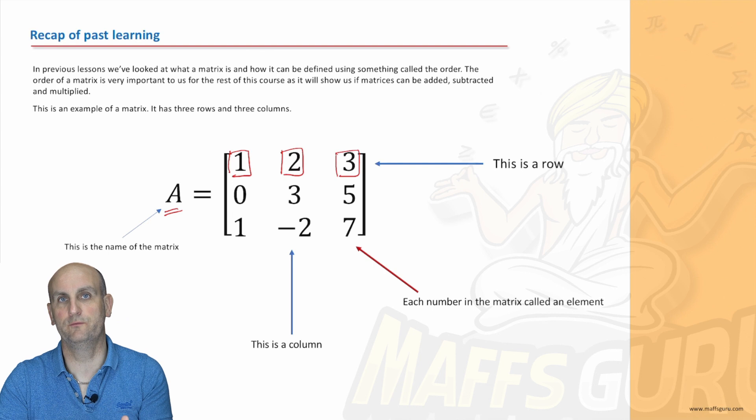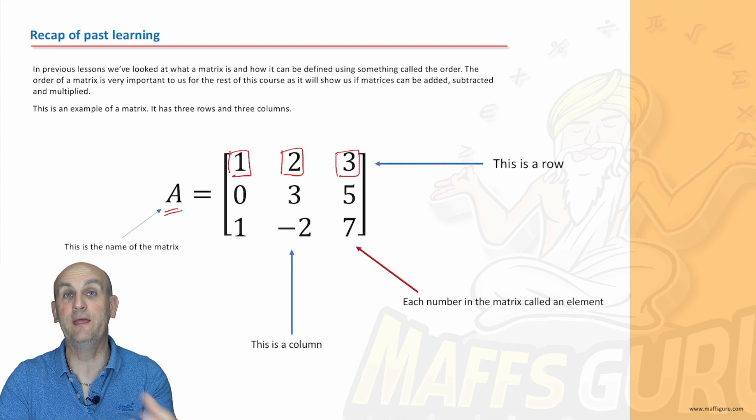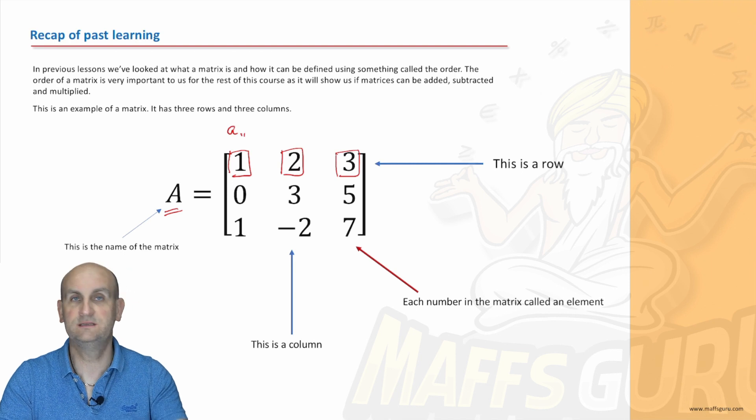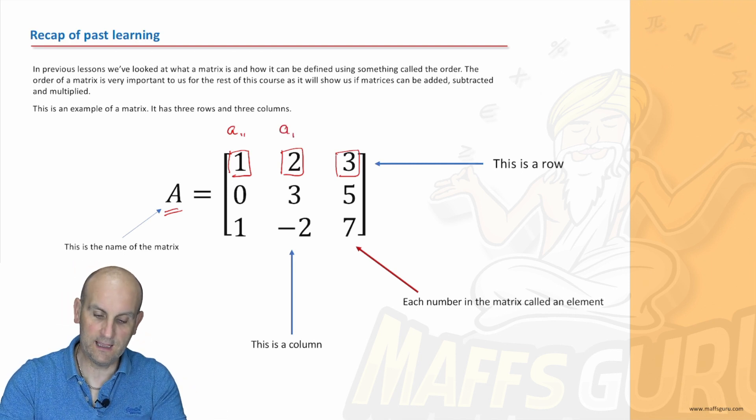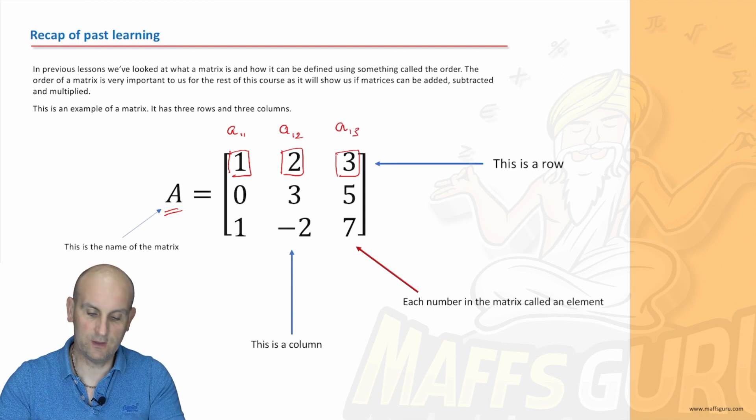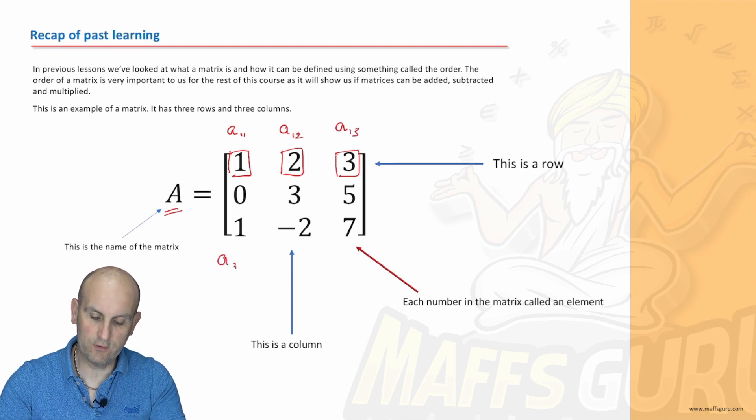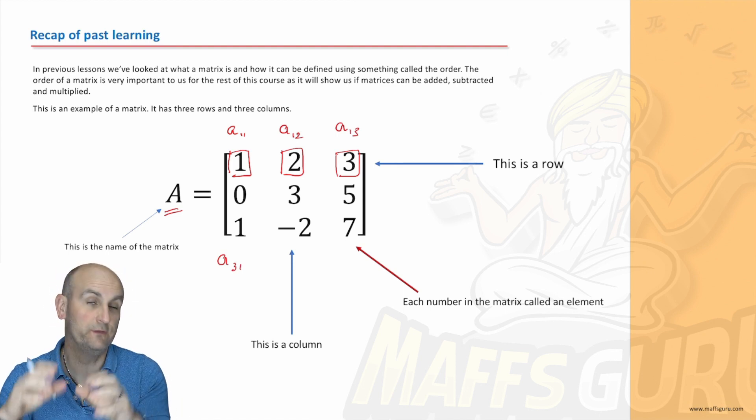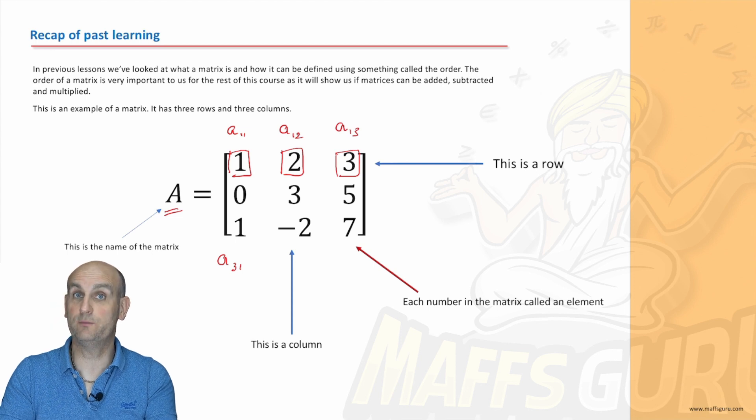Each of these numbers stands for an element, and it is so important for you to think of those elements and their addresses. This element here would be a11 because it's row 1 column 1. This element here would be a12, a13, and so on. This one here would be a31 and so it goes on. These elements become important for this video and very much so for one later on when we multiply these things.